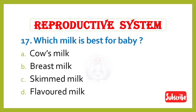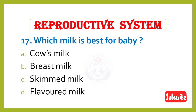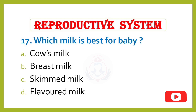Question 17. Which milk is best for a baby? Option A – Cow's milk, Option B – Breast milk, Option C – Skimmed milk, Option D – Flavored milk. Correct answer is Option B: Breast milk, also known as mother's milk, is best for a baby.